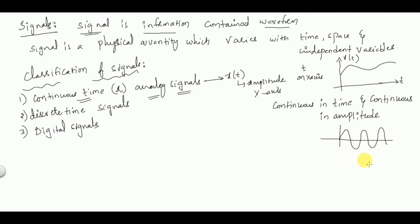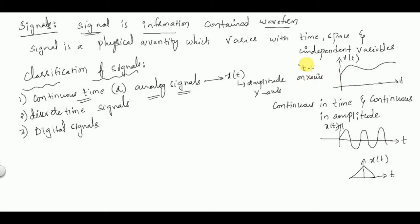For example, sinusoidal signals, triangular signals — all these are examples of continuous time signals. They are represented by x(t), with t as the time axis on the x-axis.